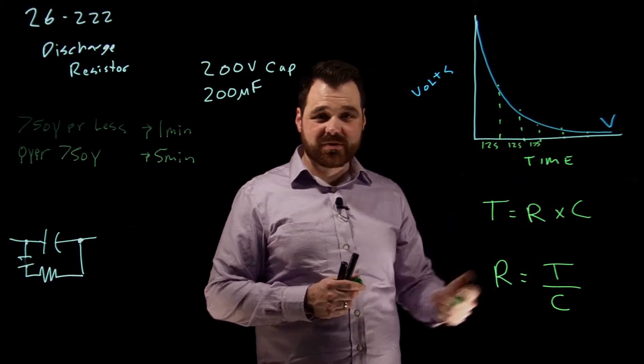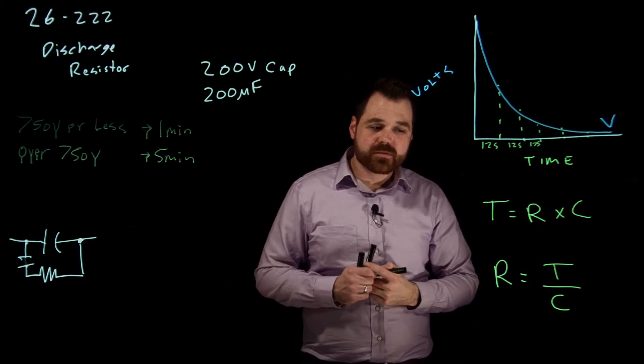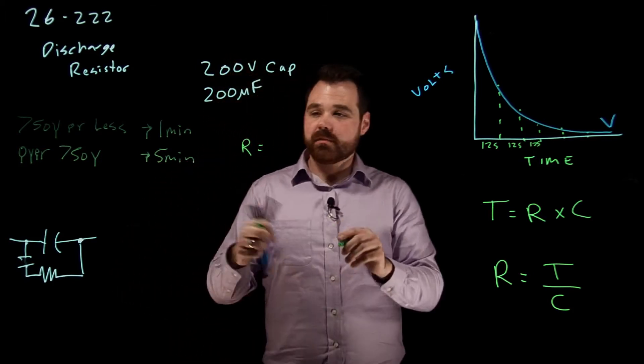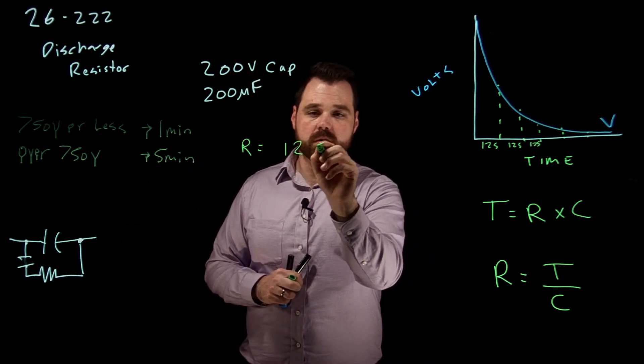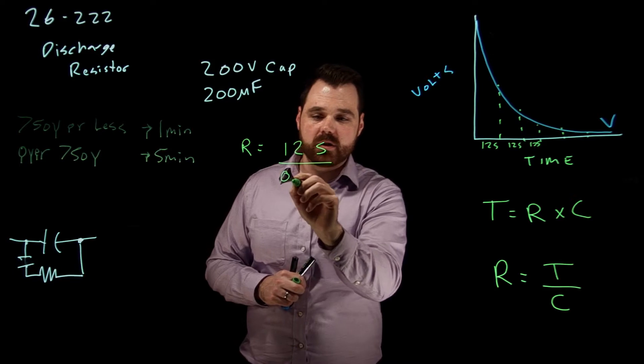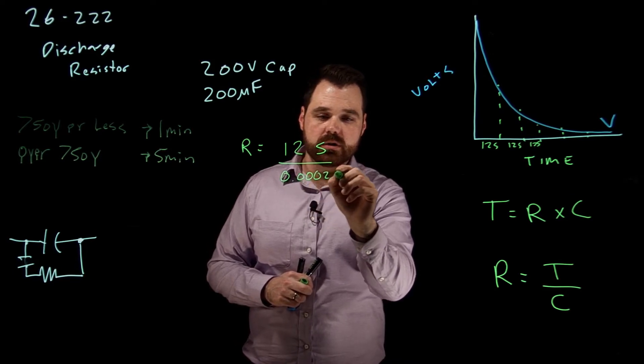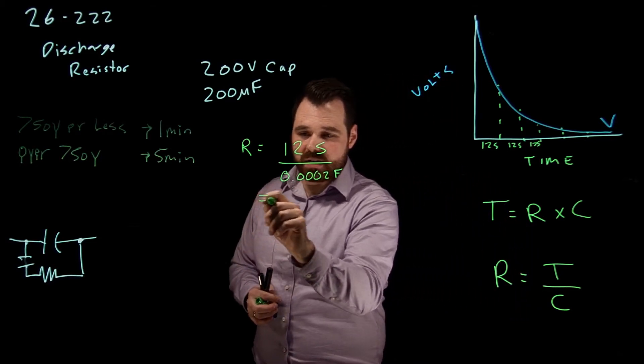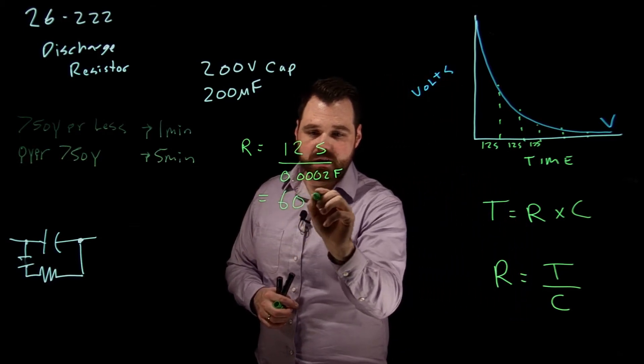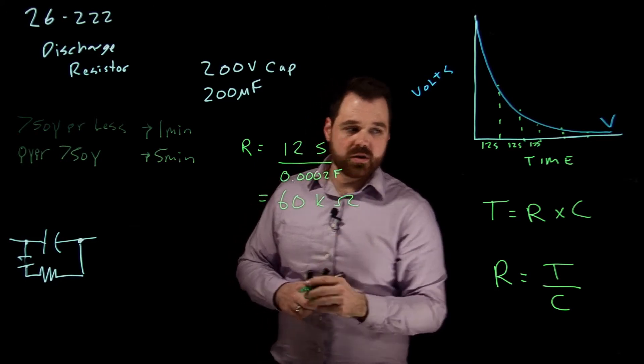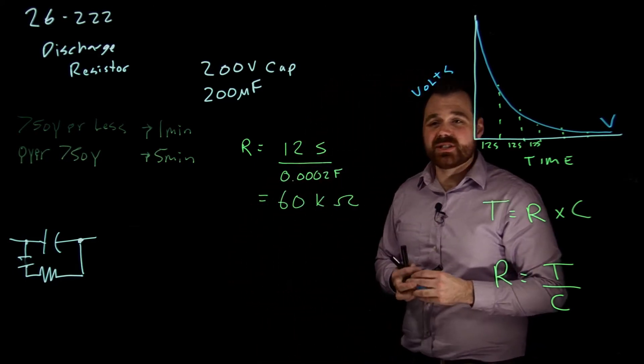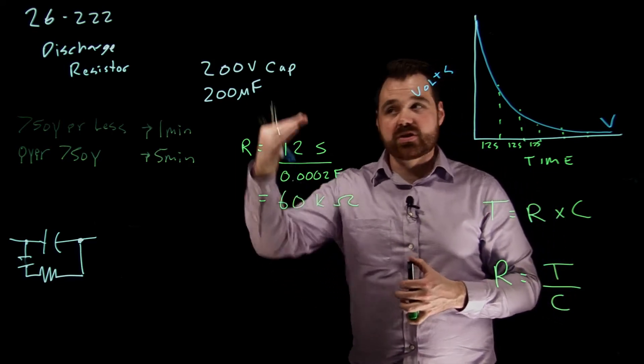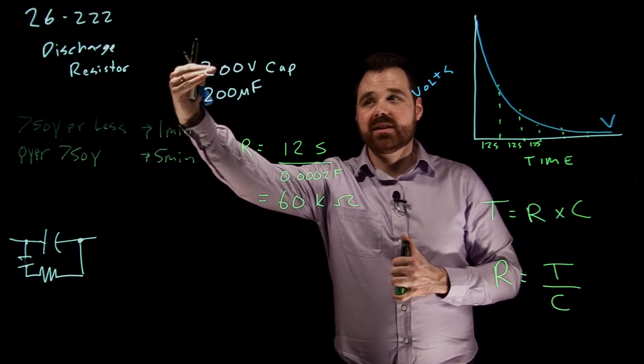So if all those are 12 seconds, 12 seconds, 12 seconds, I can calculate that. So I can go resistance. My R would equal my 12 seconds divided by my 0.0002 farads, my 200 microfarads. That's going to tell me in this case, I would require a 60 kiloohm resistor. So 60 kiloohms would be the size of the resistor I would require for this 200 microfarad capacitor at 200 volts.